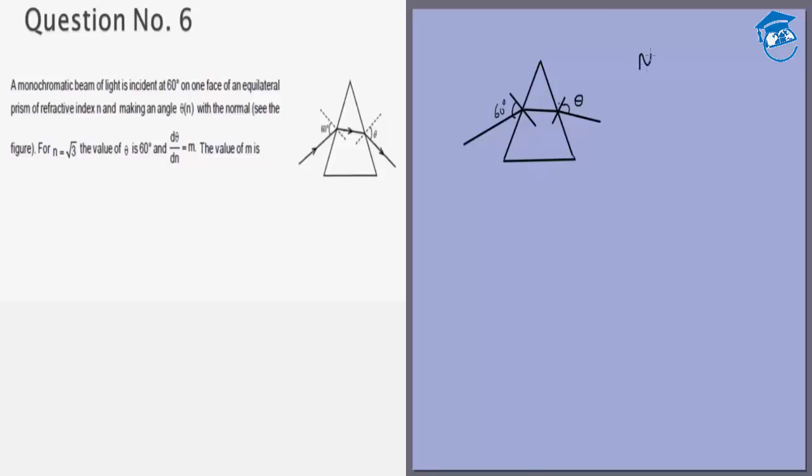First thing we are given is n equals root 3 and theta equals 60. For these two values we want to find the value of d theta by dn. That means we want to find the derivative of theta with respect to n and then we can use these three values to calculate.